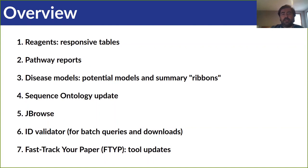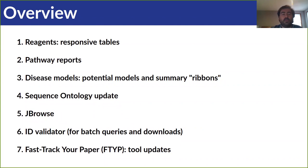The Flybase updates that we want to highlight cover a broad range of aspects. They generally fall into one of two categories. The first category includes new features that help you deal with the ever-increasing amount of information at Flybase, either by providing tools to find reagents of interest or by providing visualizations that summarize the data to provide a better view of the big picture. In the second category, we have improvements to things that are more familiar, like JBrowse, ID validator, fast-track your paper, and sequence ontology data.